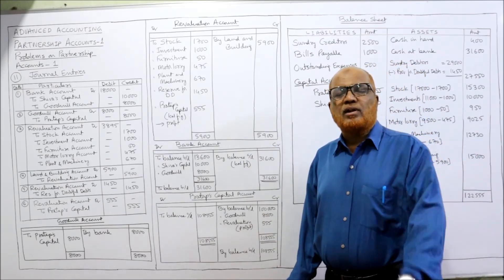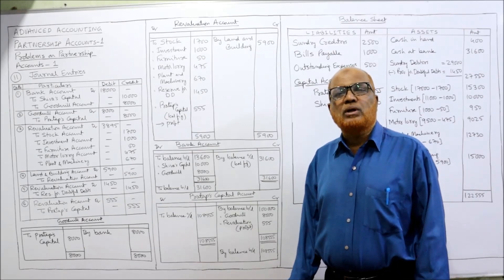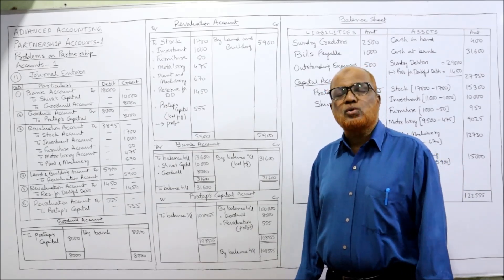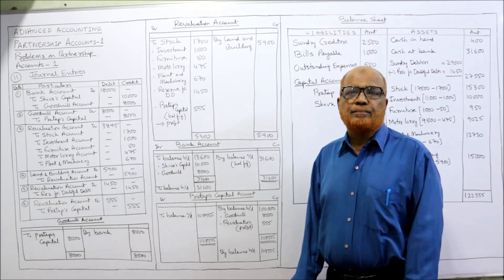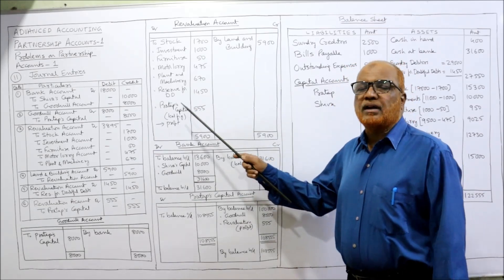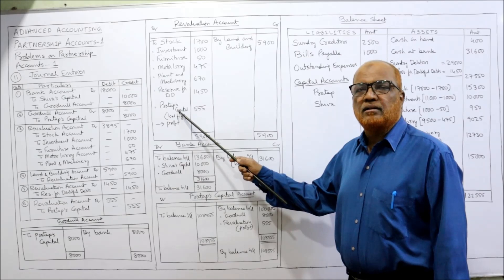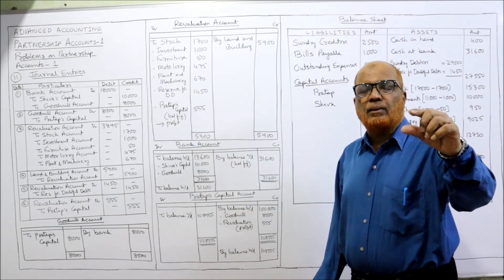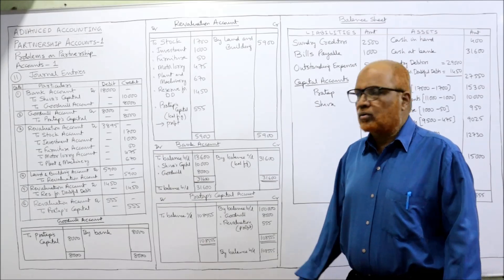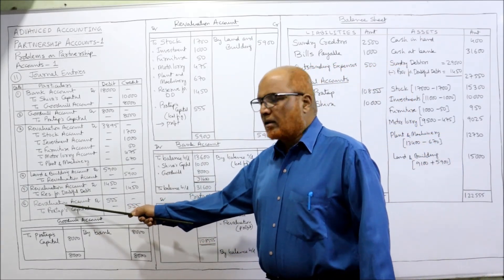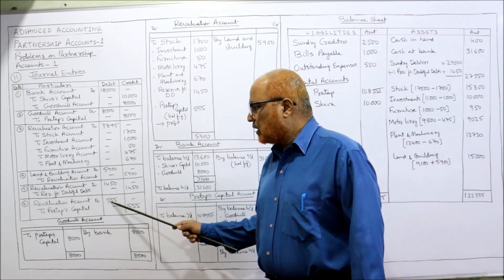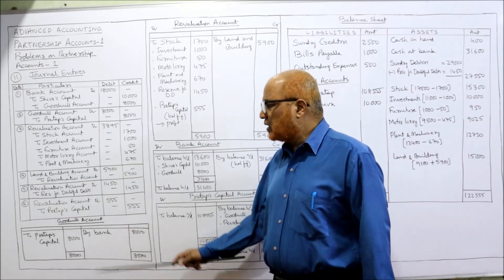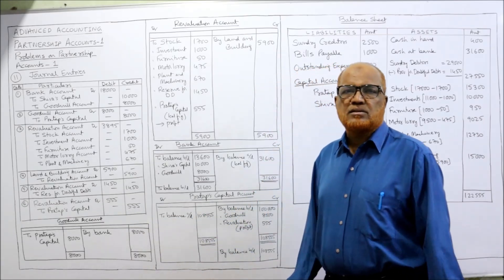The profit on revaluation of ₹555 will be transferred to the sole trader Pratap. Entry: Revaluation Account Debit ₹555 — To Pratap's Capital Account ₹555 — being the profit on revaluation transferred. With this entry, the revaluation account is closed.